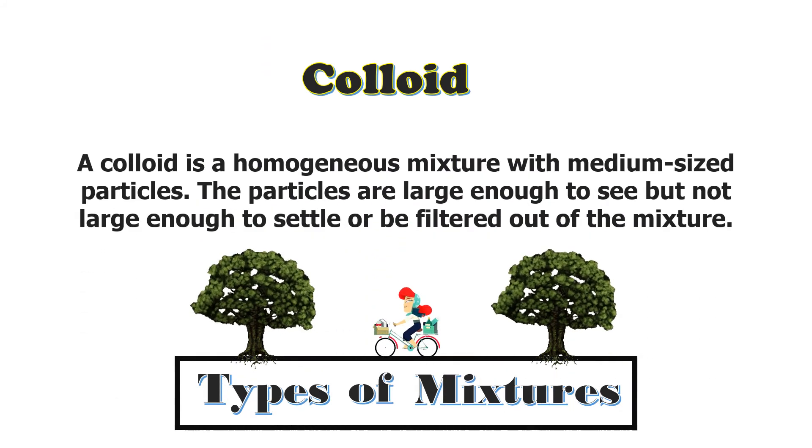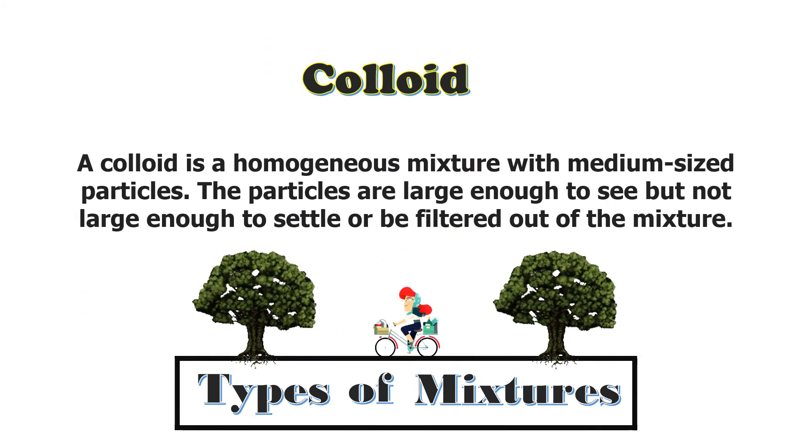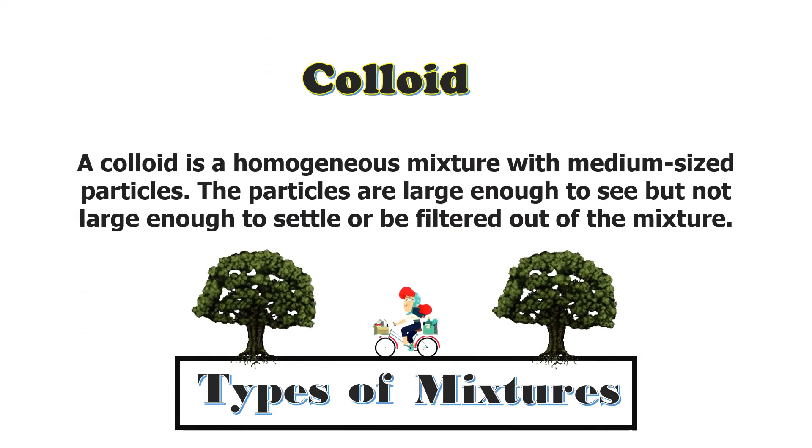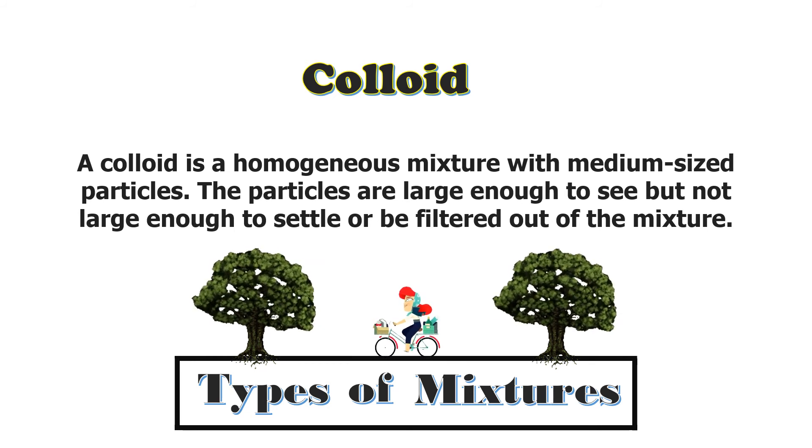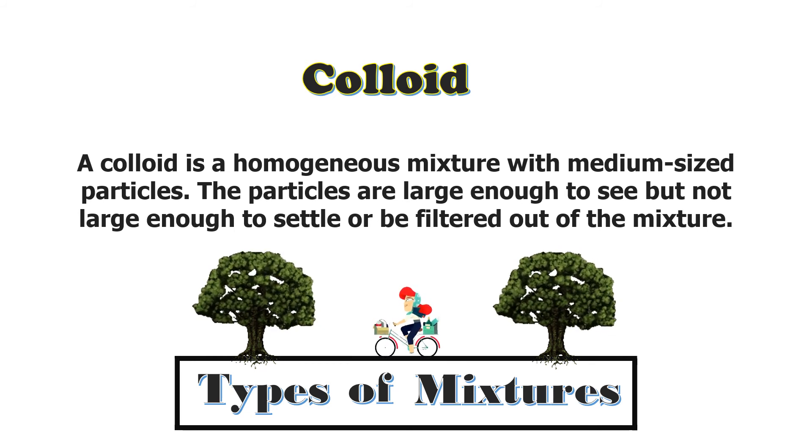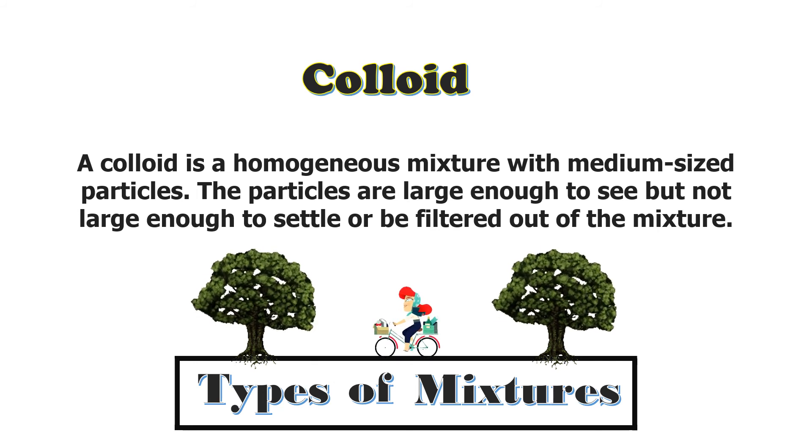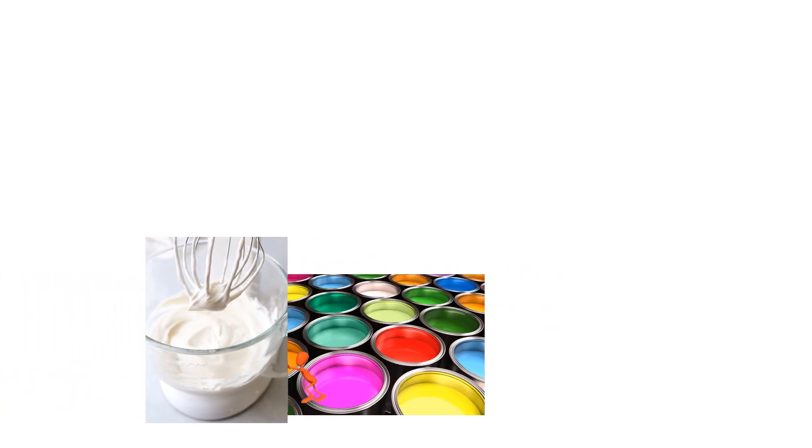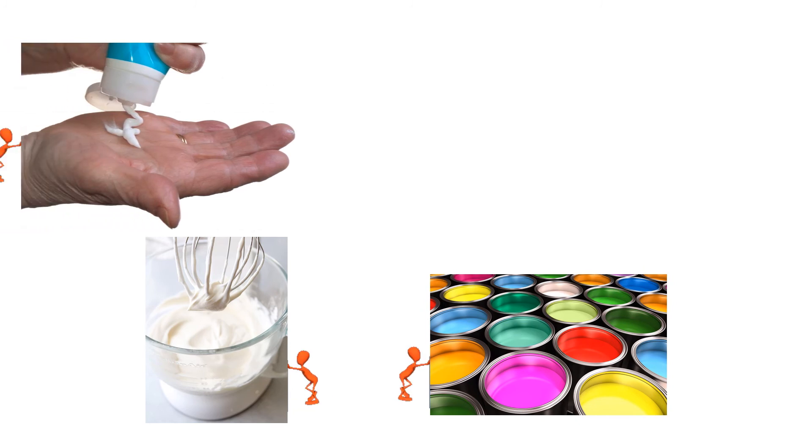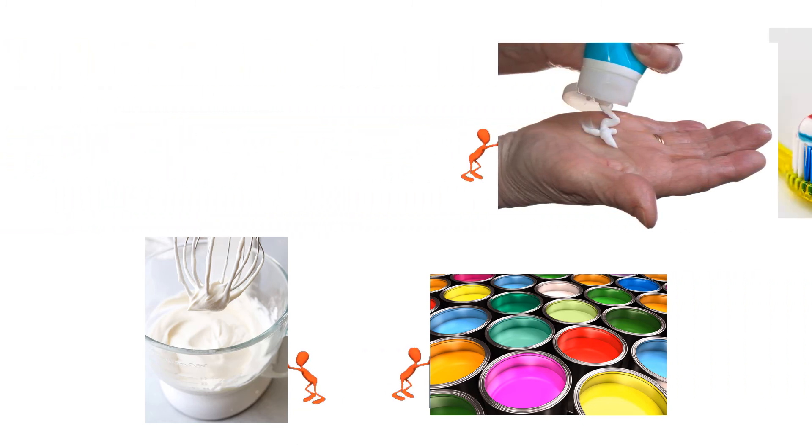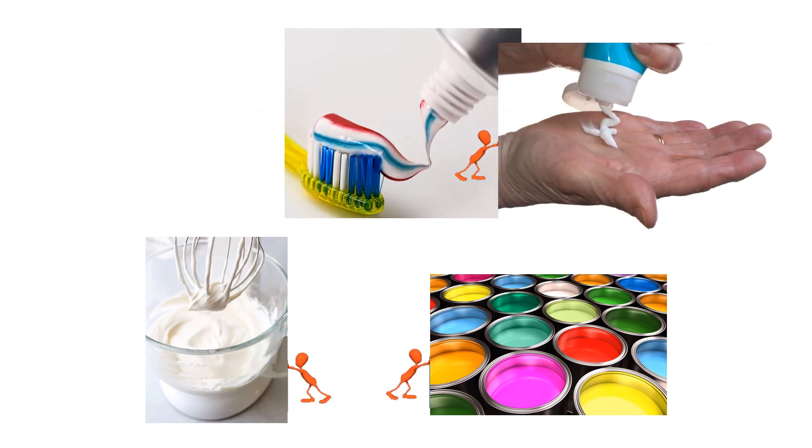Colloid: a colloid is a homogeneous mixture with medium-sized particles. The particles are large enough to see but not large enough to settle or be filtered out of the mixture. Examples are whipped cream, paints, hand creams or hand lotions, and toothpaste.